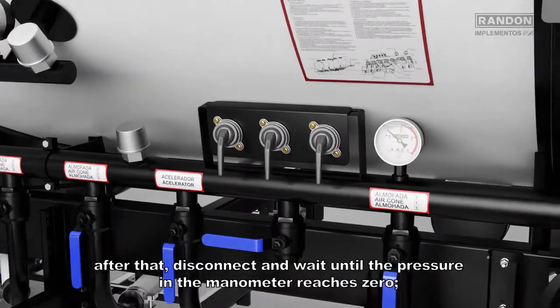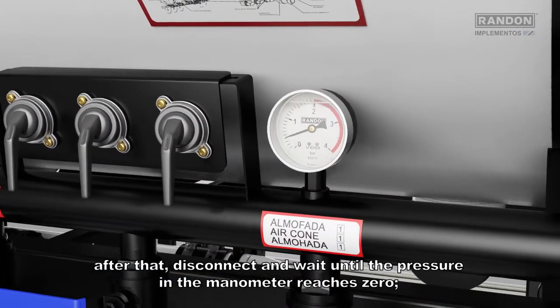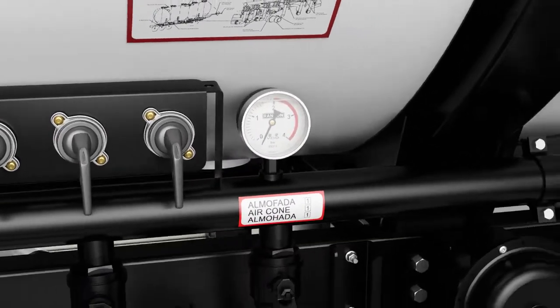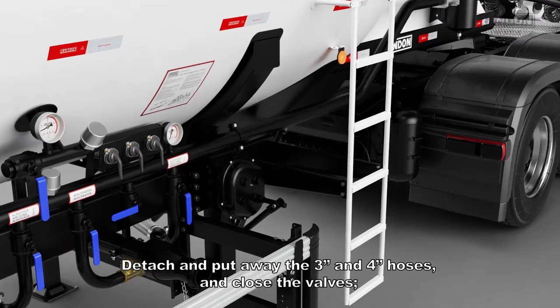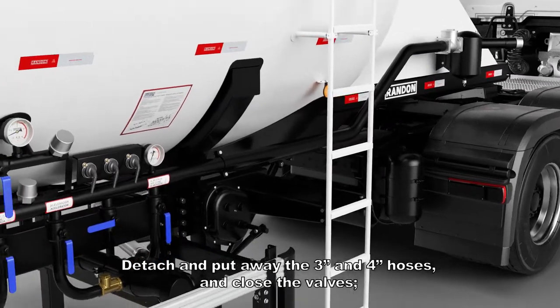After that, disconnect and wait until the pressure in the manometer reaches zero. Detach and put away the 3-inch and 4-inch hoses and close the valves.